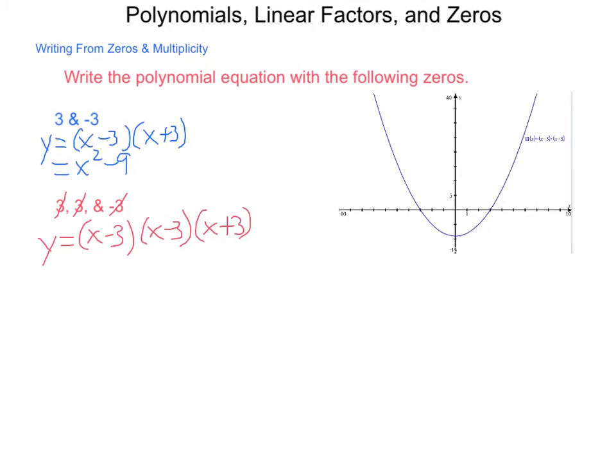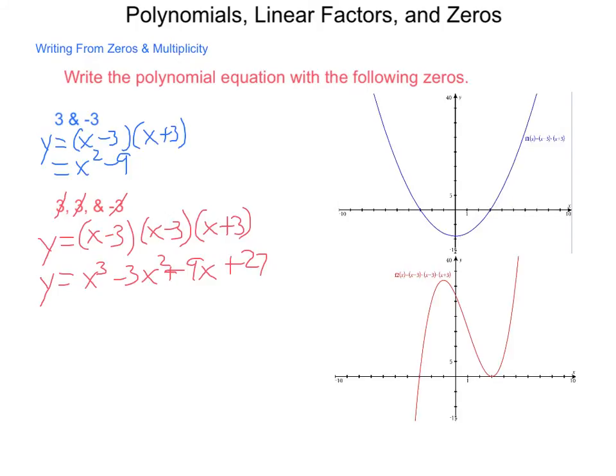Multiplying this out, we get the expression, or the equation, y equals x cubed minus 3x squared minus 9x plus 27. So, again, going through and graphing this, we would come up with a graph that looks like this.